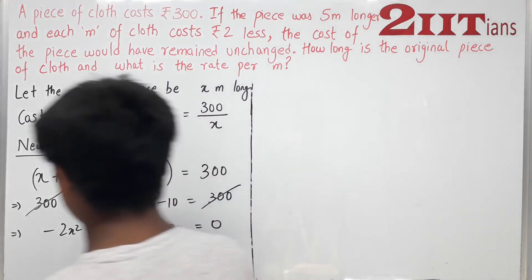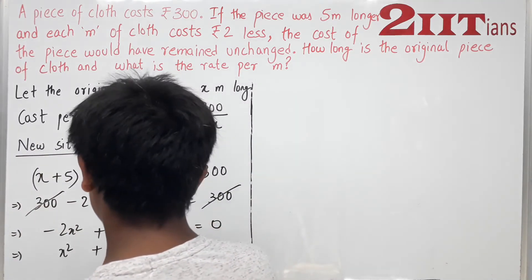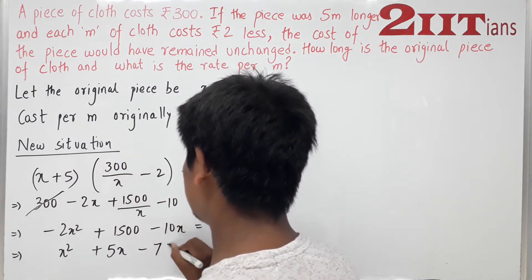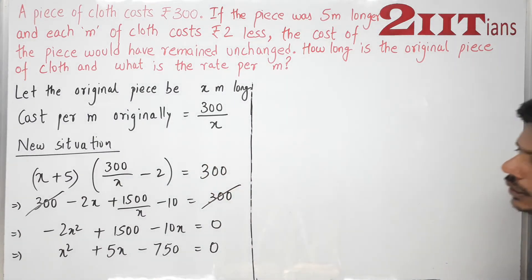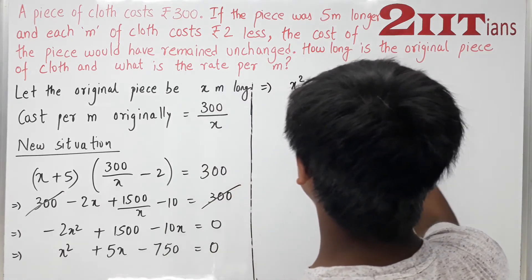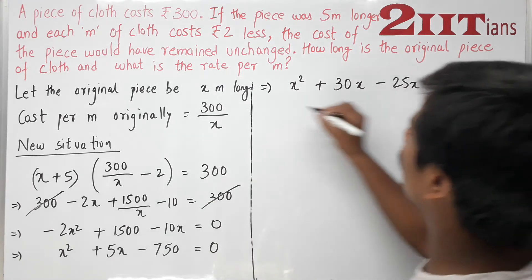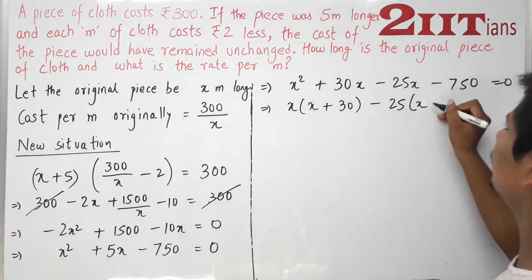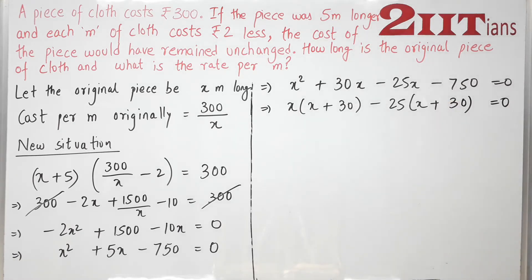Dividing through by −2: x² + 5x − 750 = 0. We can factor 750 as 25 × 30, giving us x² + 30x − 25x − 750 = 0.